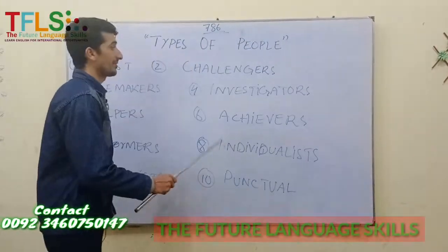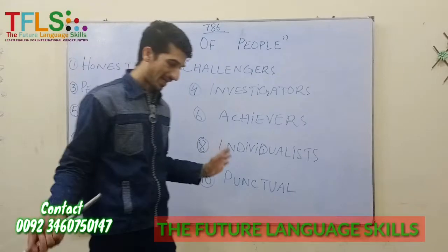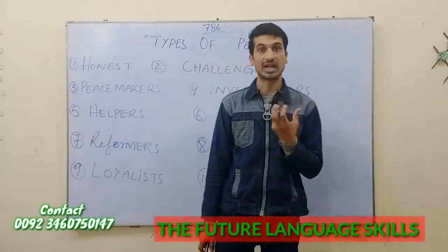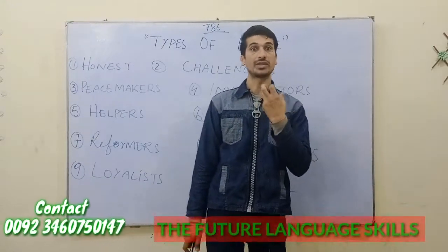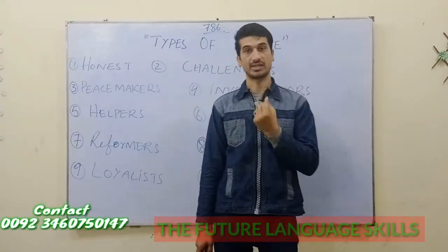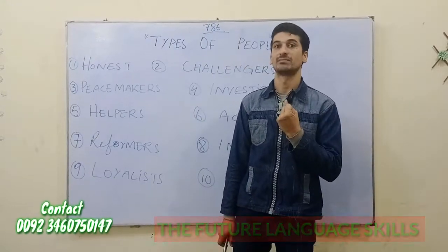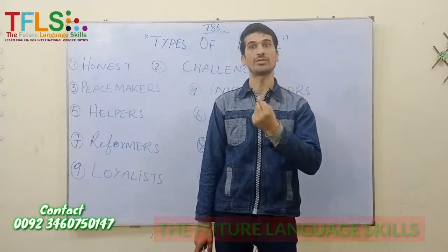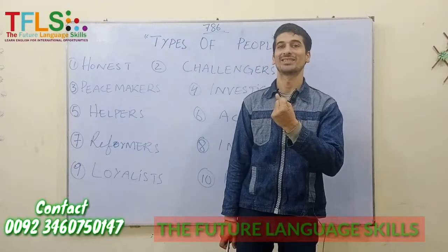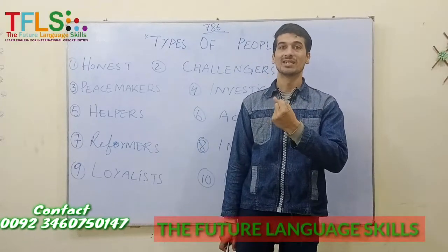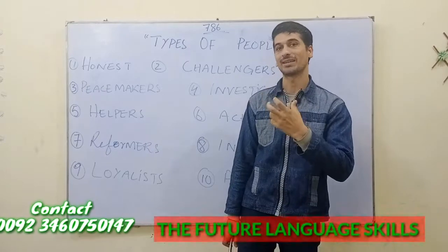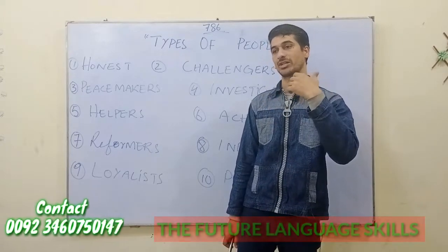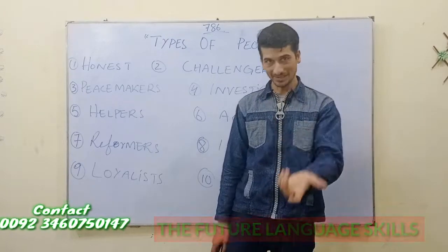Number six: 'achievers.' Achievers are those people who have achieved something in life — 'jo chiz thaan lete hain usko achieve karte hain' (those who set a goal and achieve it). So you can say: I like a friend who is an achiever.